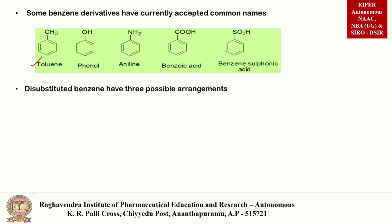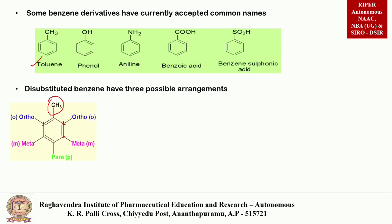When disubstitutions are present, we use ortho, meta, and para positions. The first substitution is the main one. The second substituent attached to the adjacent carbon atom is called the ortho position. The carbon atom next to ortho indicates the meta position, and directly opposite the first substitution is the para position.